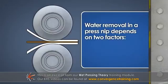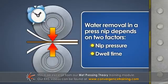The amount of water removed in a press nip depends on two factors: nip pressure and dwell time, the time the sheet is exposed to that pressure.